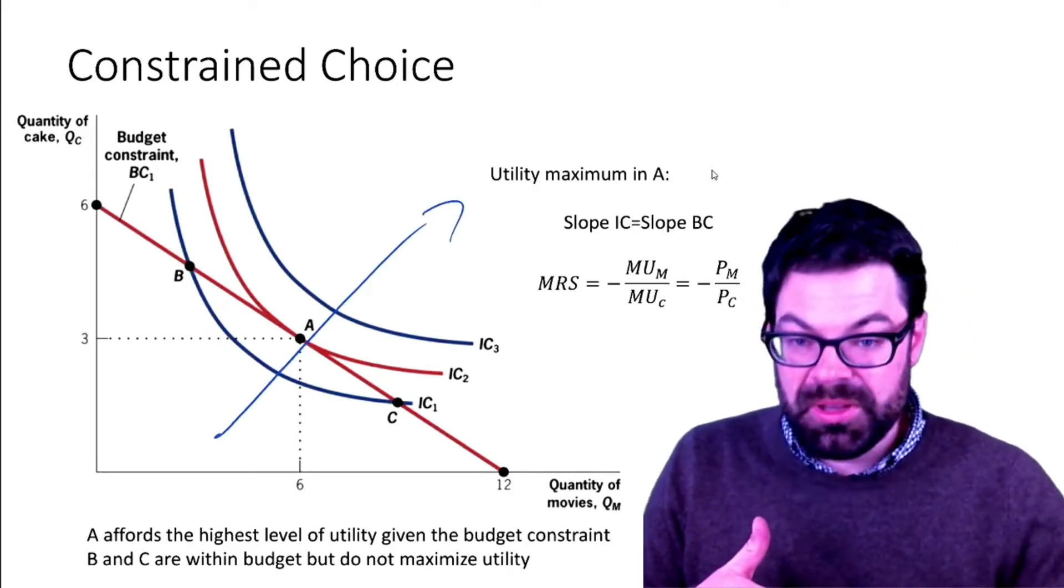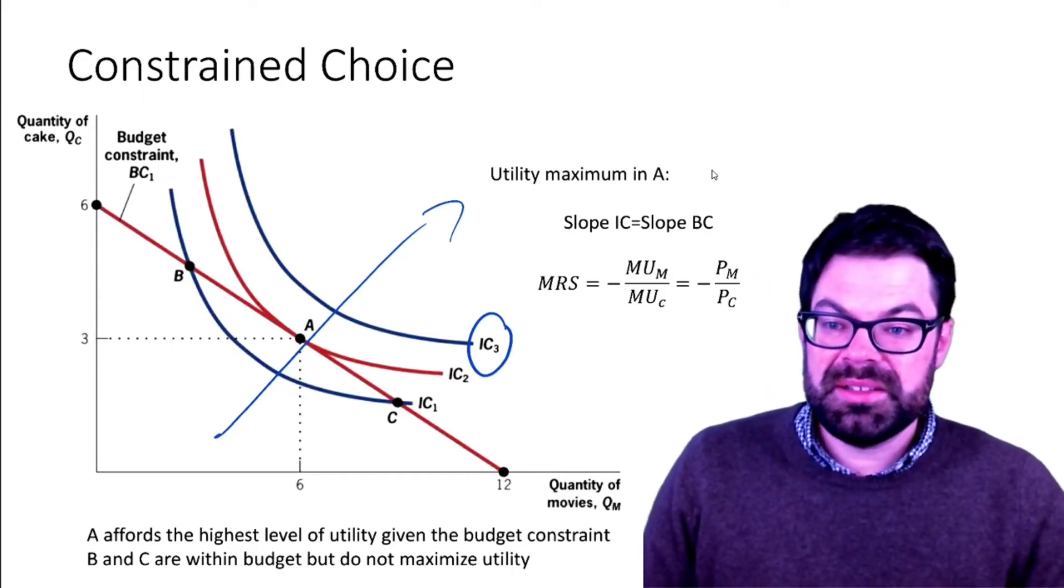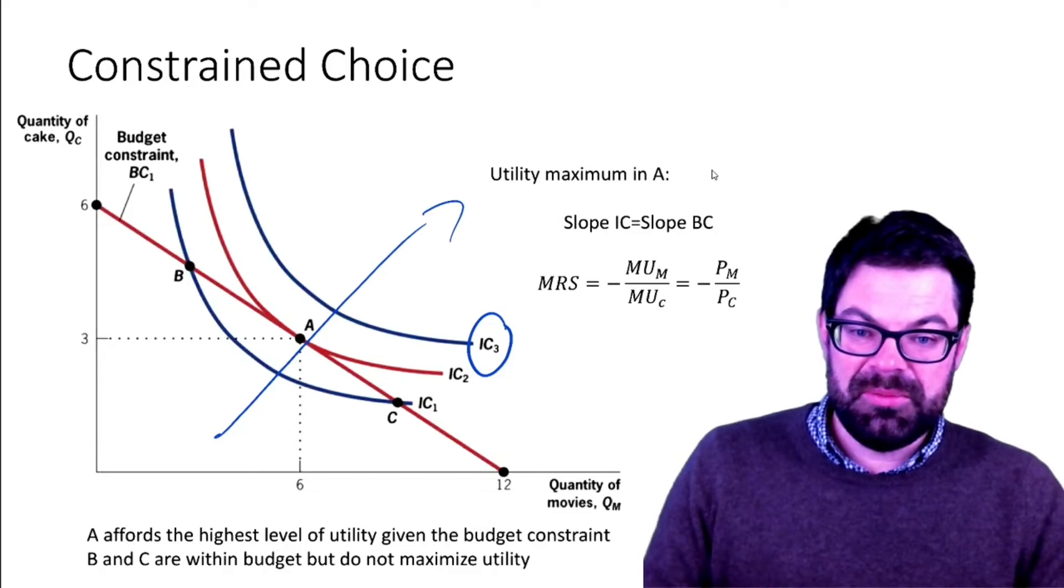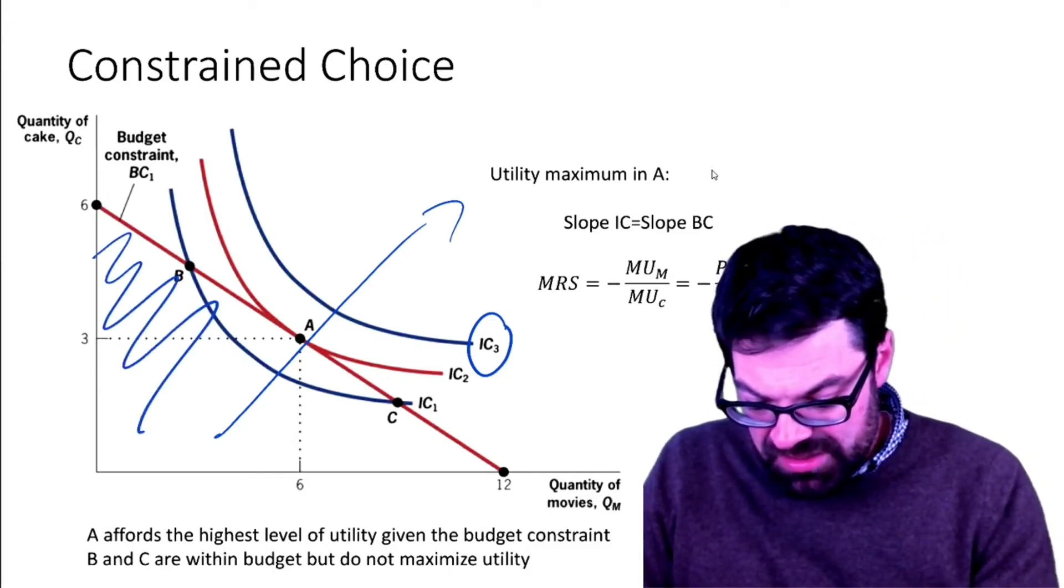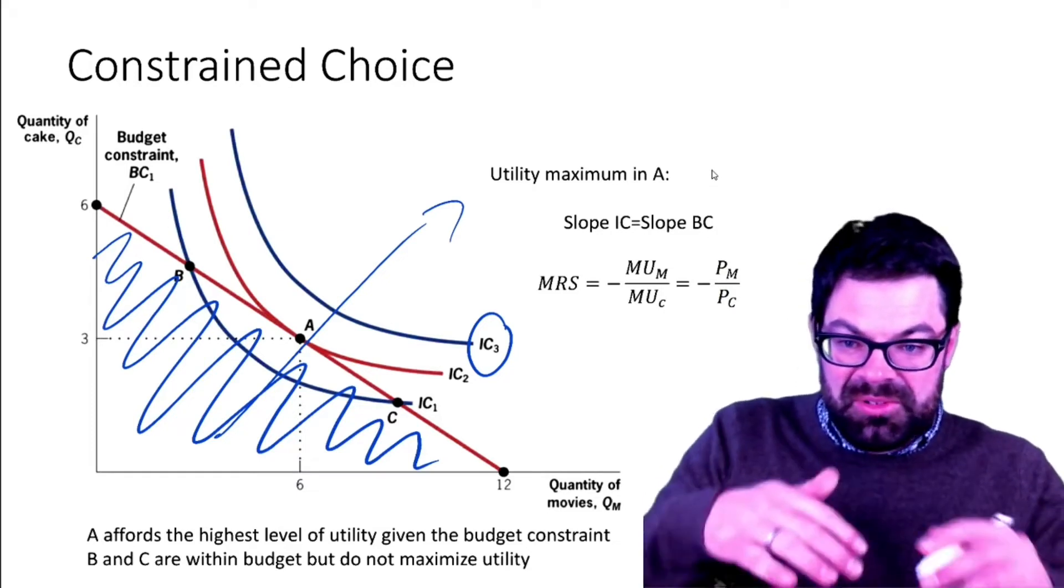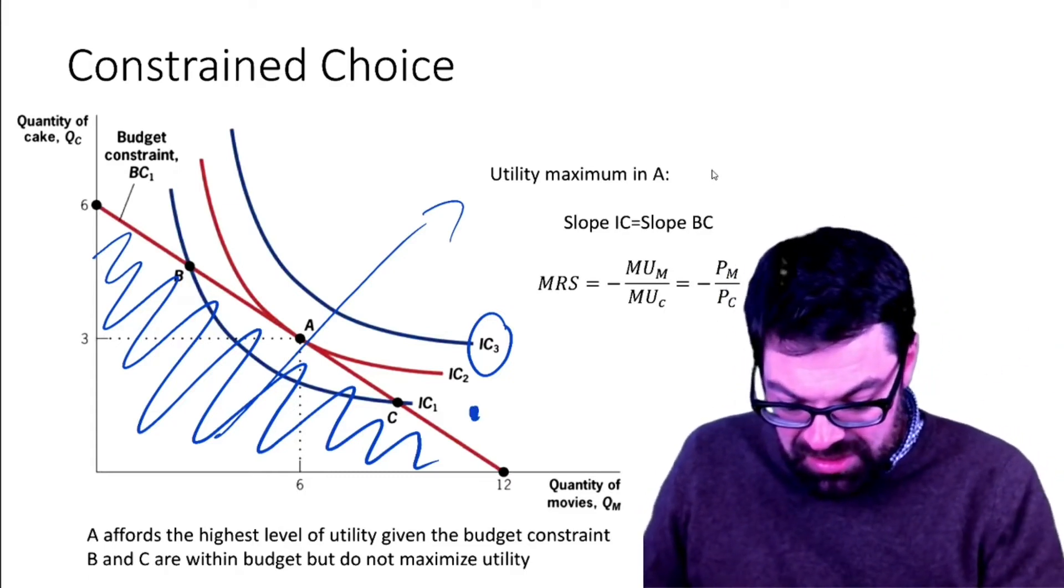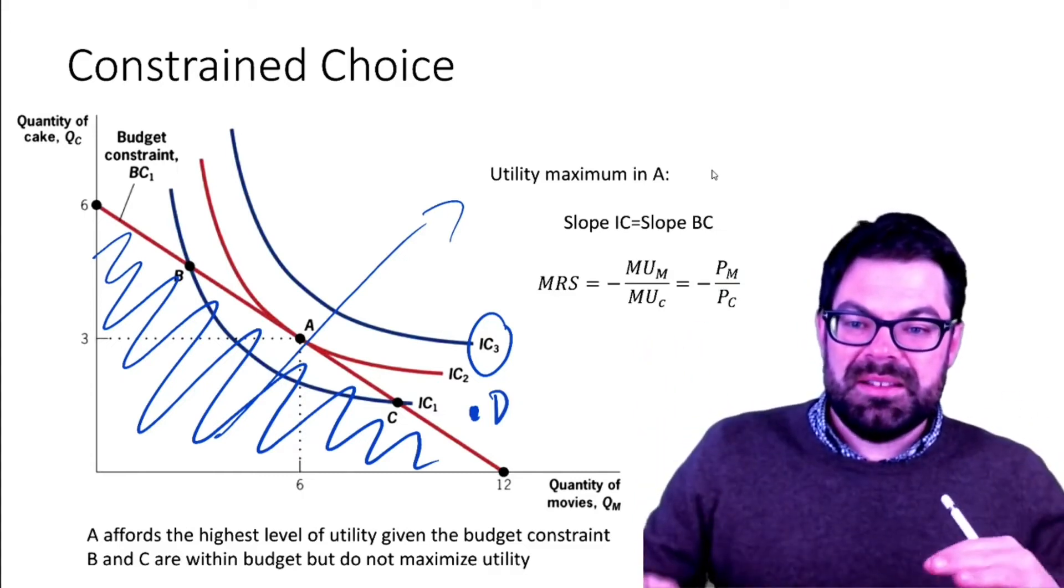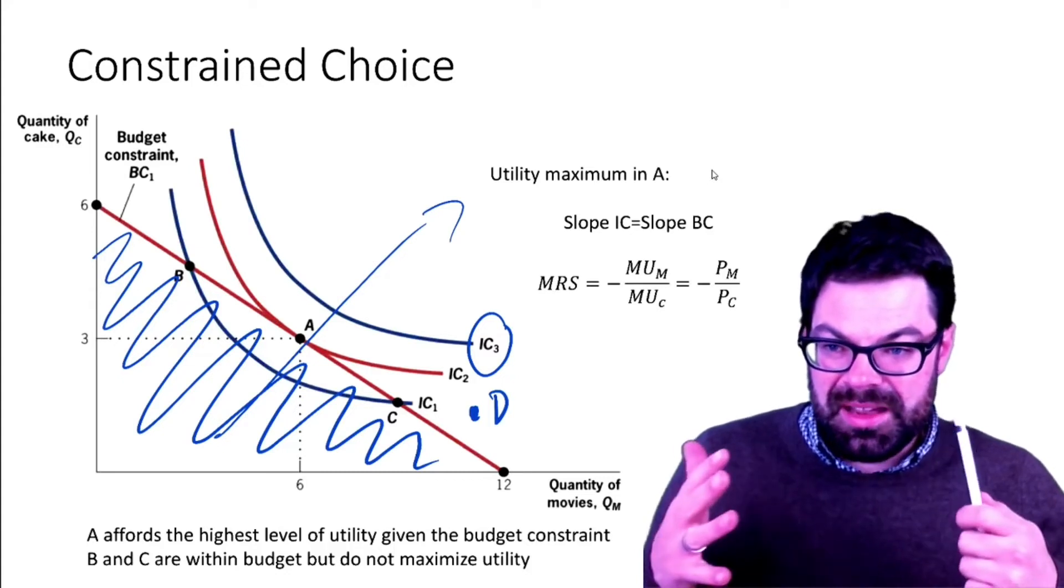Here you can see three indifference curves indicating three different utility levels. The further we move from the origin, the higher the utility level. We can immediately see that indifference curve three is not attainable with the budget of that person. They can only attain whichever is in that set highlighted here in blue, of which the boundary is the budget constraint. The entire indifference curve three lies outside of that set and so it's not attainable.